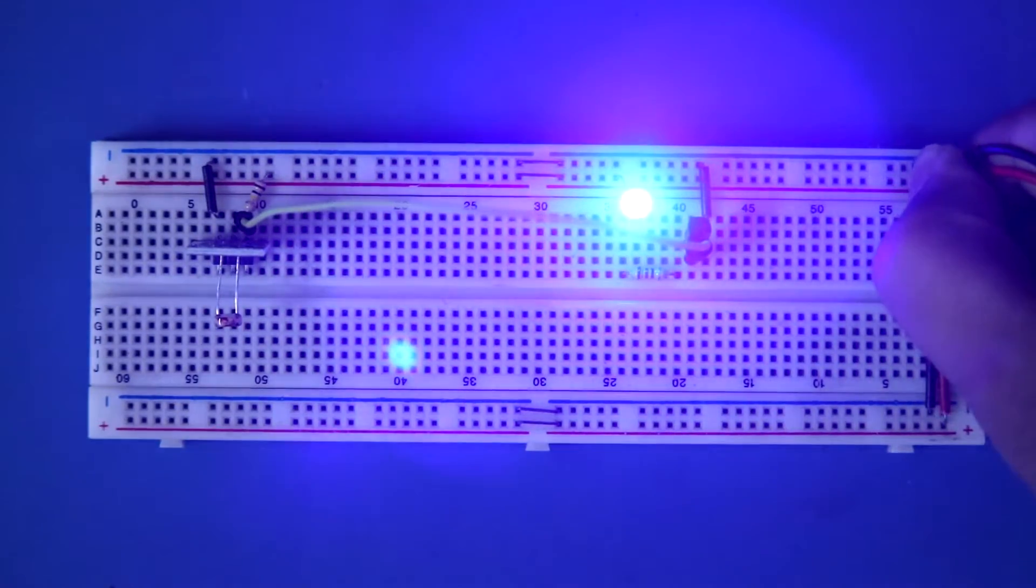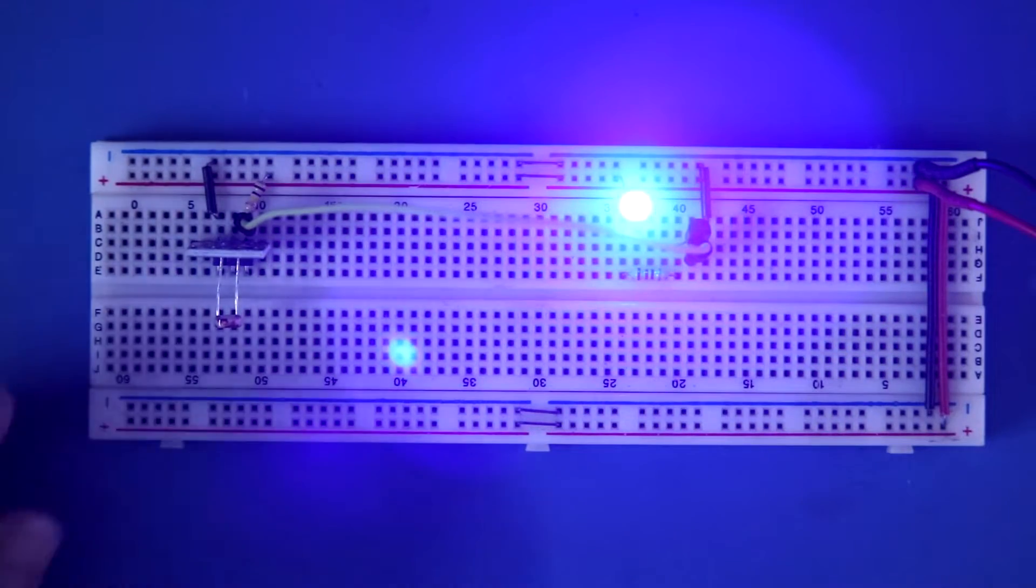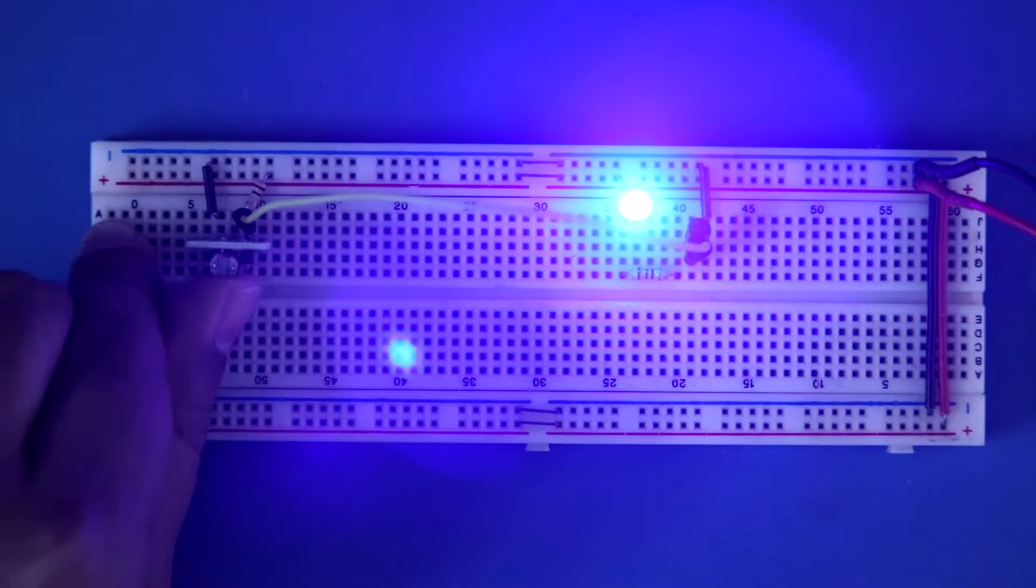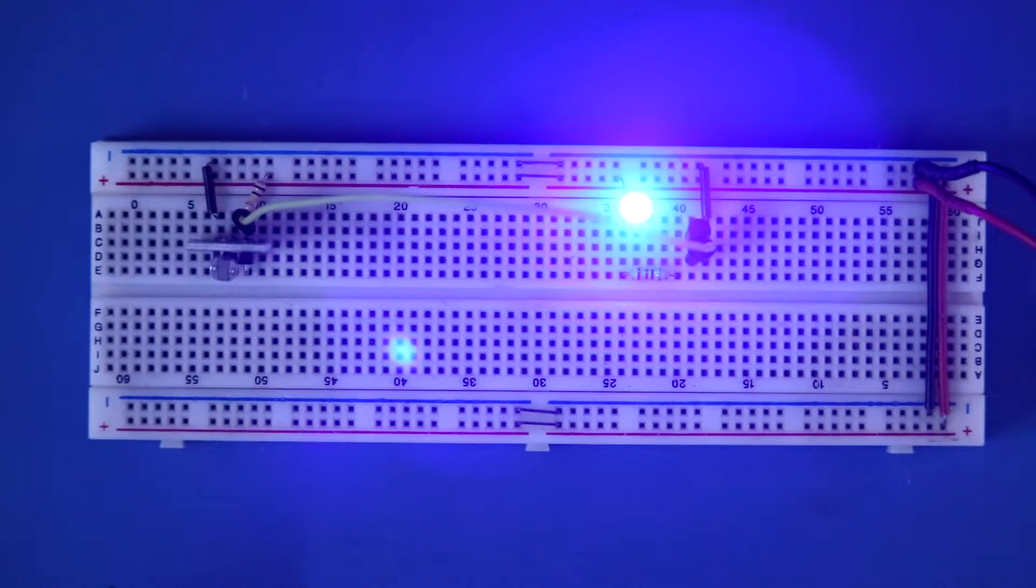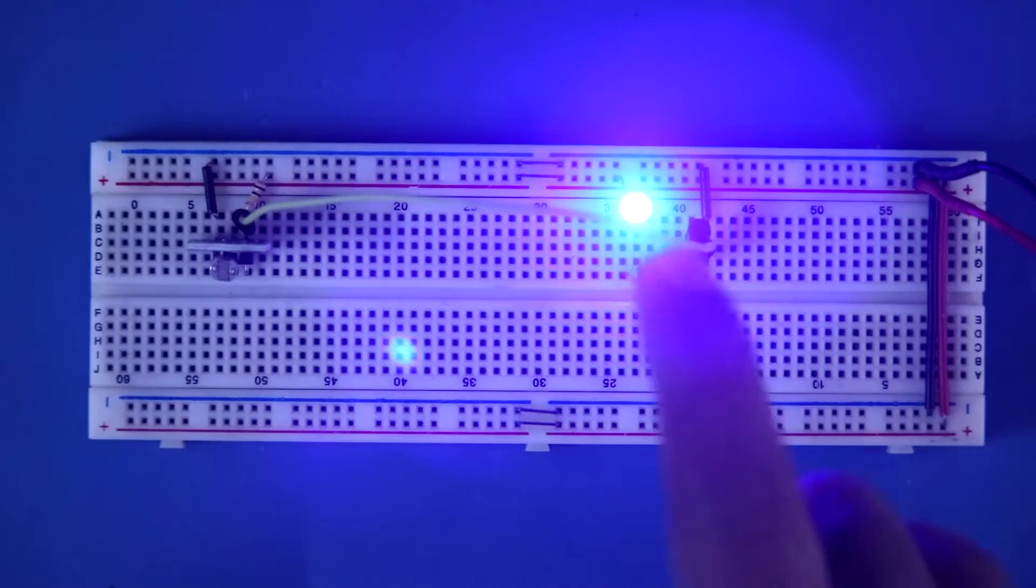Now I am connecting plus 5 volt power supply. If more light hits on this sensor, then LED will turn off.